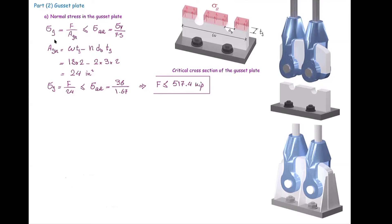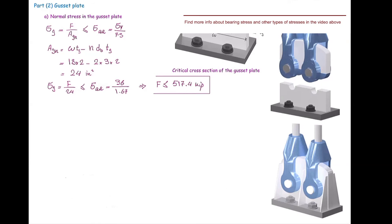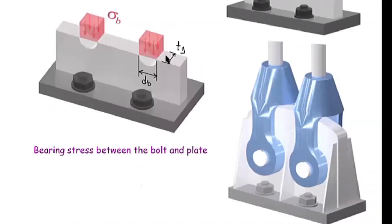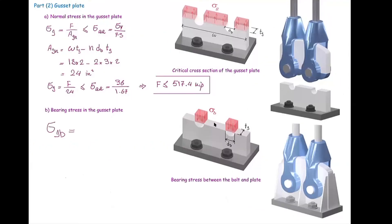There is another type of failure in the gusset plate: bearing stress, which occurs where two different elements are in contact. The bolt is in contact with the gusset plate, and in the contact area — which is a half circle — there will be a bearing stress. Since that stress is non-uniform and difficult to calculate exactly, we simplify by assuming it is uniformly distributed. Instead of the half-circle area, we use the projected rectangular cross-section, distributing the force over that projected area. With two bolts there will be two contact areas.